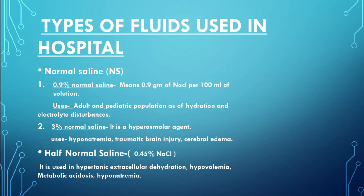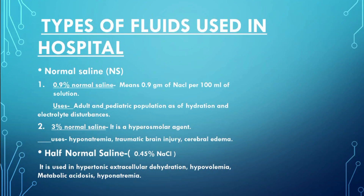Half normal saline is used mainly for prevention of dehydration and volume maintenance. When a patient has hypovolemia — meaning low blood volume — it helps restore blood volume toward normal. It is also used in metabolic acidosis treatment and hyponatremia.